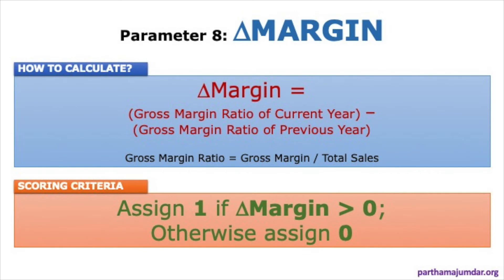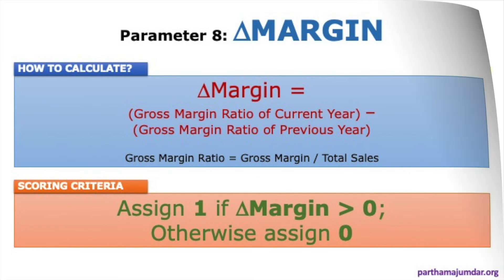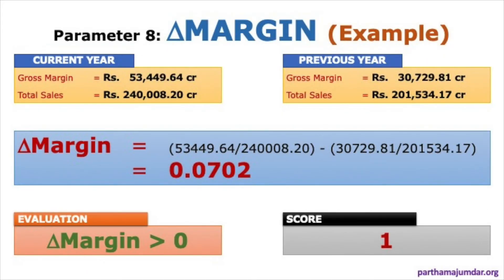Parameter 8 is Delta Margin, calculated as the gross margin ratio of the current year minus the gross margin ratio of the previous year. The gross margin ratio = gross margin divided by total sales. If Delta Margin > 0, assign a score of 1; otherwise 0. Using figures from the annual report for Gujarat Alkalies, Delta Margin works out to 0.0702, which is greater than 0, so the score is 1.